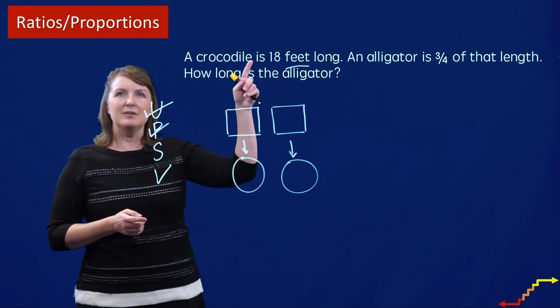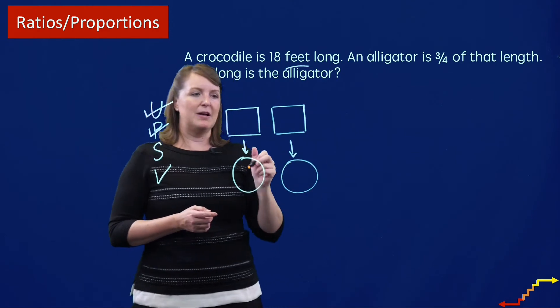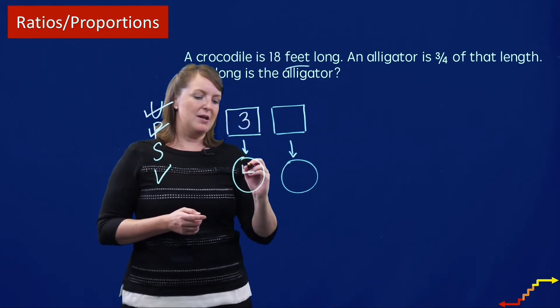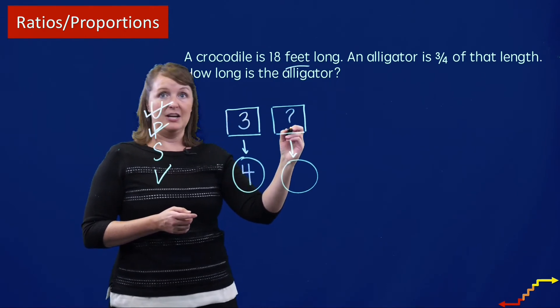So the crocodile is 18 feet long, and the alligator is 3/4 of that length. So I'm going to say the alligator is 3/4 of the crocodile. I don't know how long that alligator is,